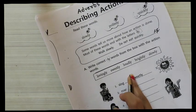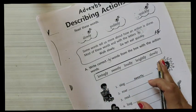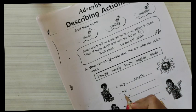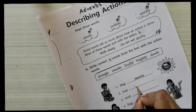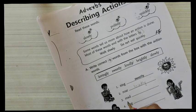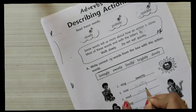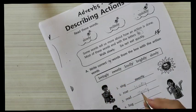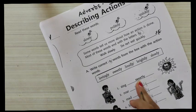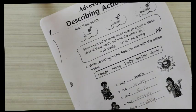So here you have to use the correct adverb. The first example is already given: sing sweetly. So the lion roars — how does the lion roar? Loudly. So write here: L-O-U-D-L-Y, loudly. Read slowly. Hug lovingly. Shine brightly. You have to use these adverbs with the action words.